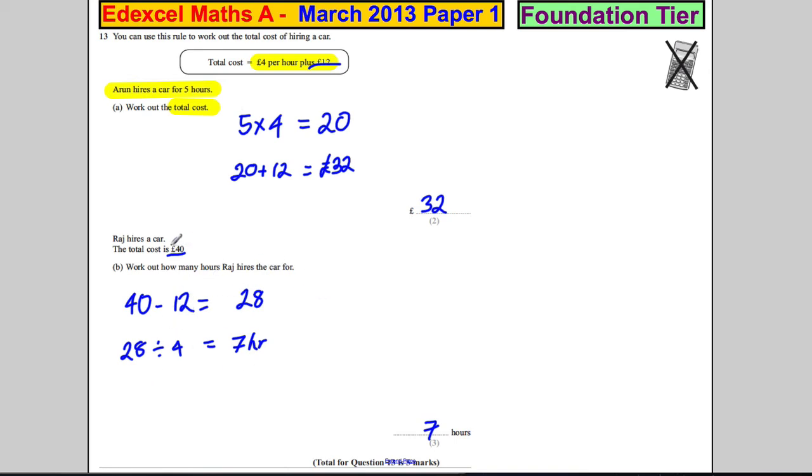If you're struggling to think like that, just think of hours that might add up to 40. You might think 10: 4 times 10 is 40, plus 12 is 52, too much. You might think 9: 4 times 9 is 36, plus 12 is 48, too much.